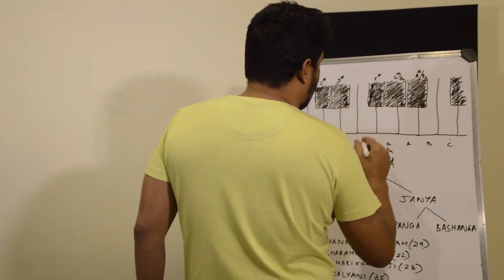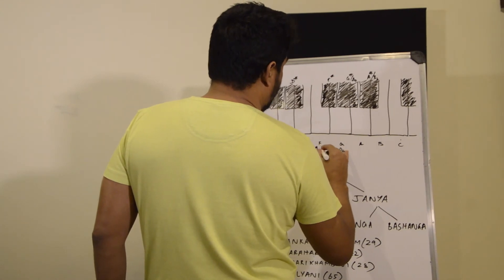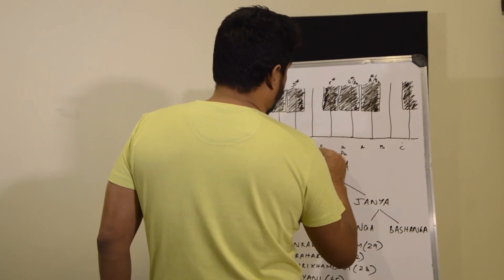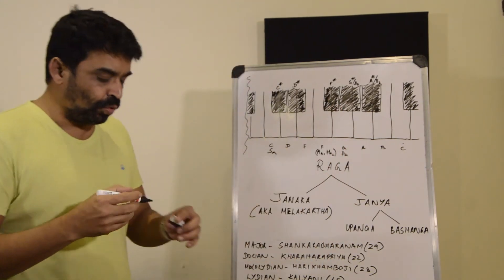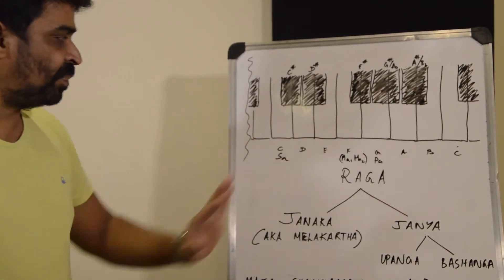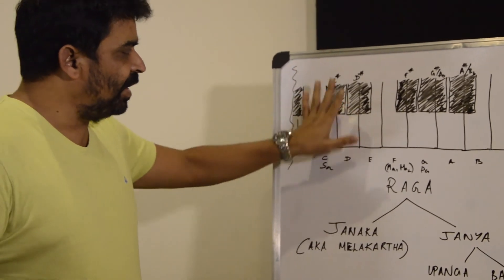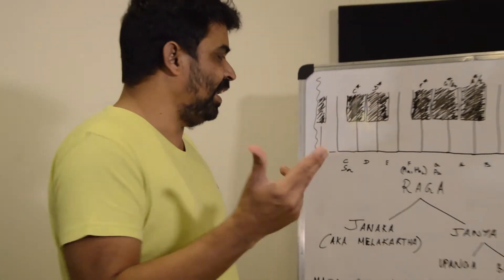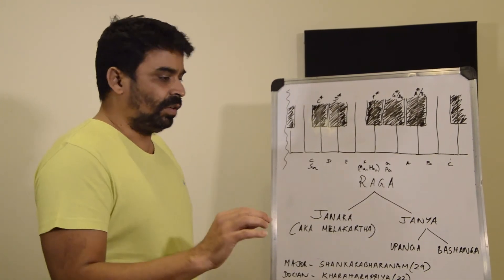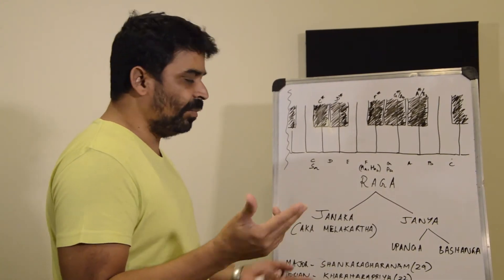F and F sharp are the two possibilities for a swara called Ma — Ma 1 and Ma 2, also called Shuddha Madhyamam and Prati Madhyamam. For the keys C sharp, D, D sharp, and E, you can pick any two keys. The lower pitch key will become Ri and the higher pitch key will become Ga.